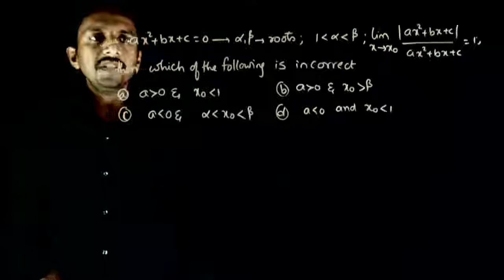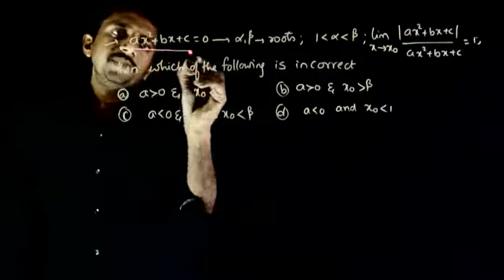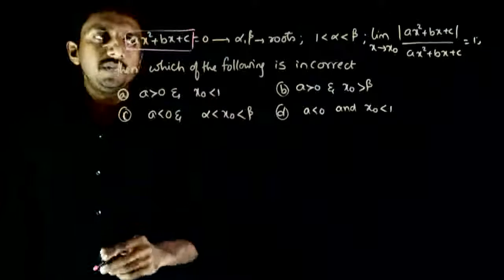So welcome students. In this question we are given ax square plus bx plus c is equal to zero,